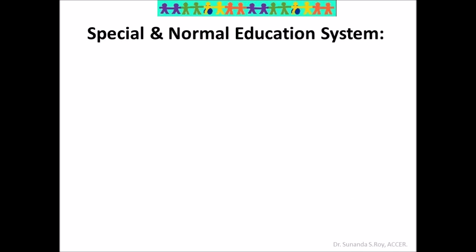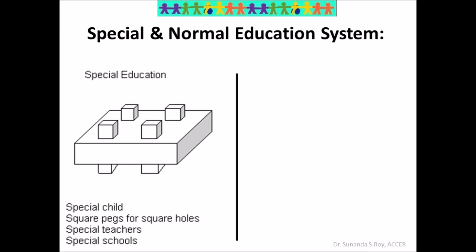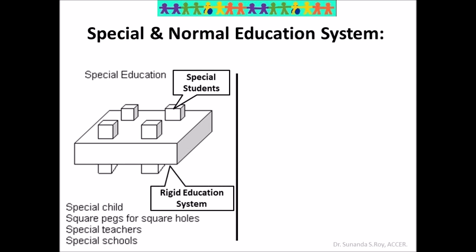We begin with the special education system. The figure shows a board with pegs, and all the pegs are of one particular shape — they are cuboid. These represent special students like the hearing impaired or mentally challenged, who require special attention or are children with disabilities. Only a specific type of student with a specific disability will fit into the special education system. These schools have special teachers who cater to one, two or more disabilities. Other students without that challenge will not be accepted, making the system rigid.